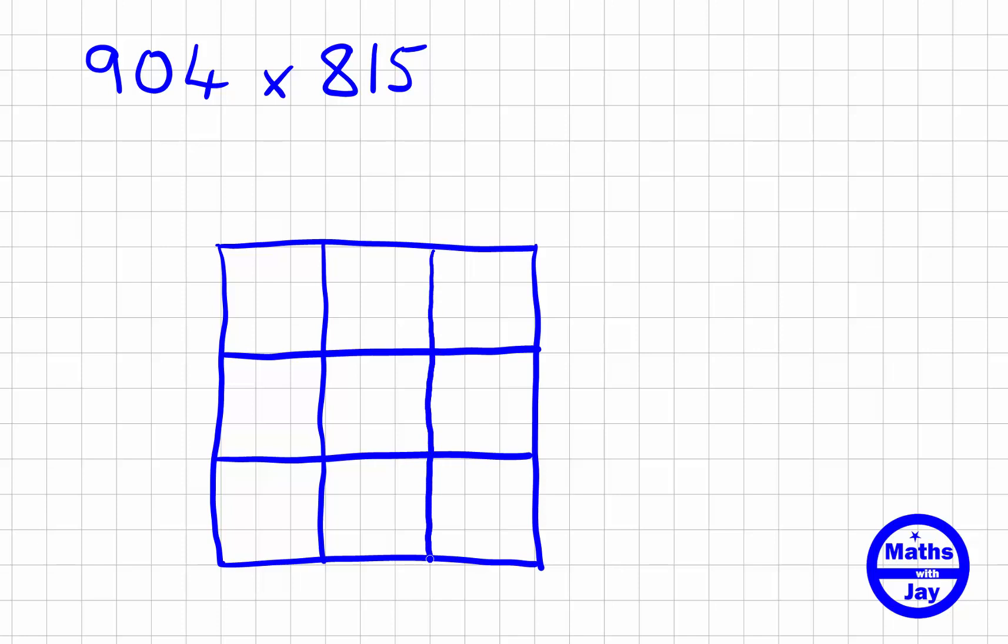So there's my lattice, three by three. Now I'm putting diagonals in. These must go through the corners of the squares—you'll see why later on, so that we can add up the right numbers when we come to work out the final answer.